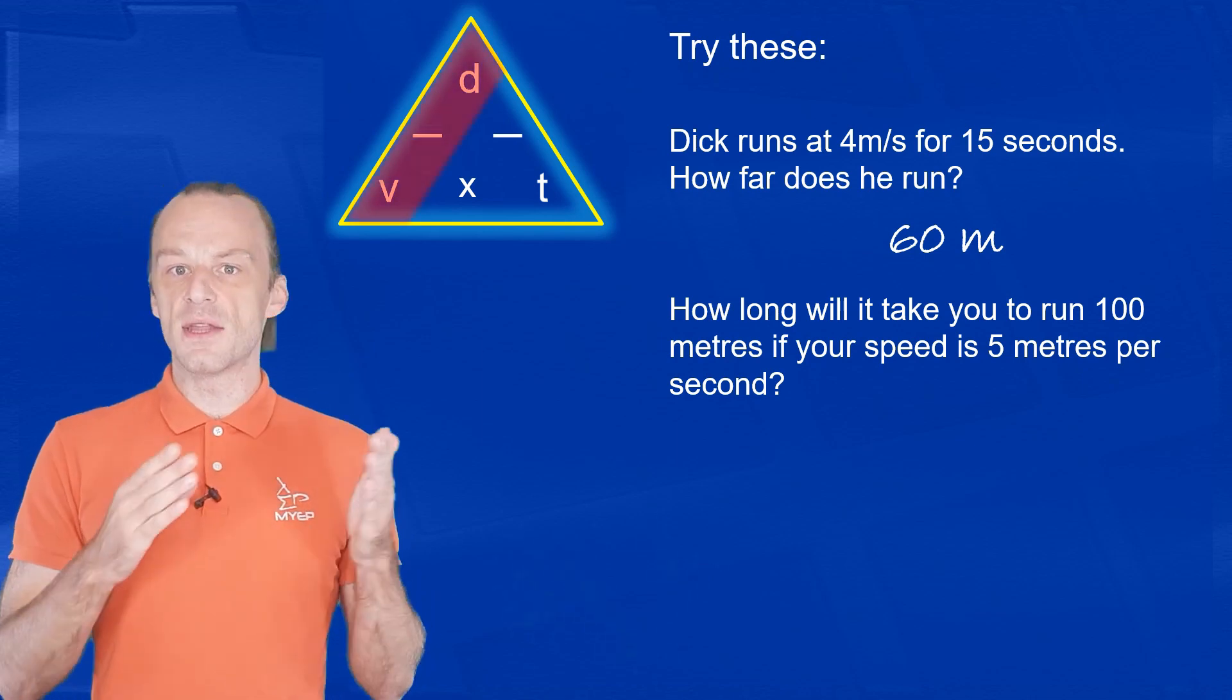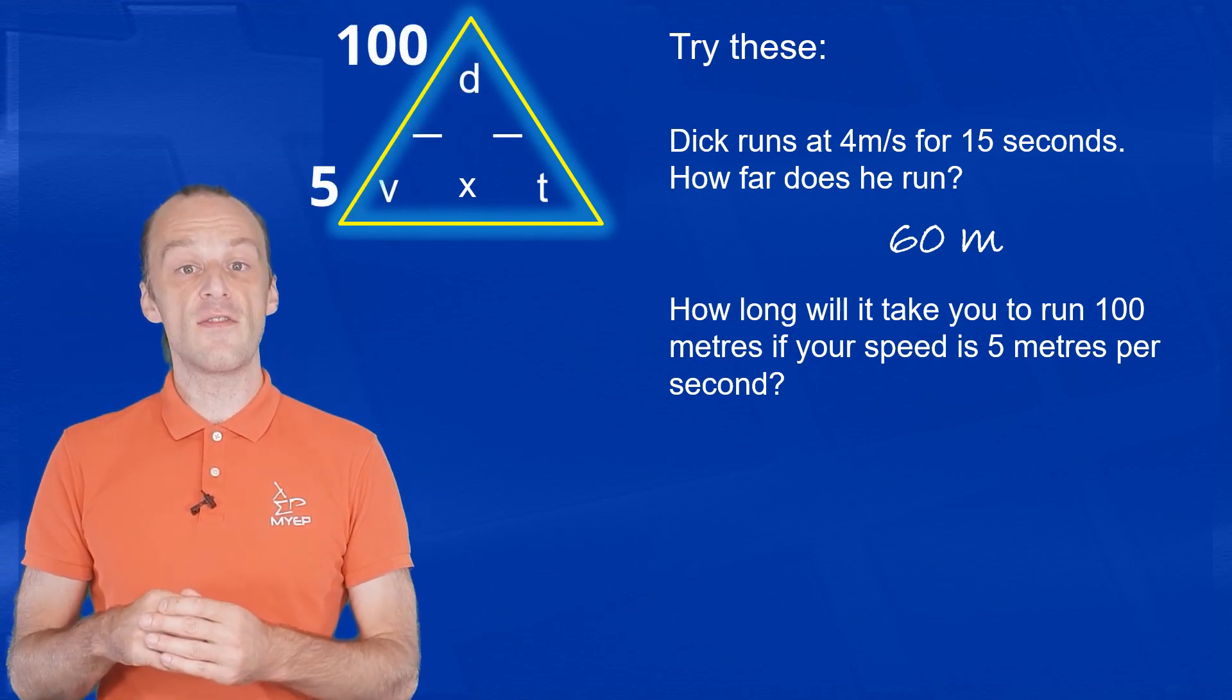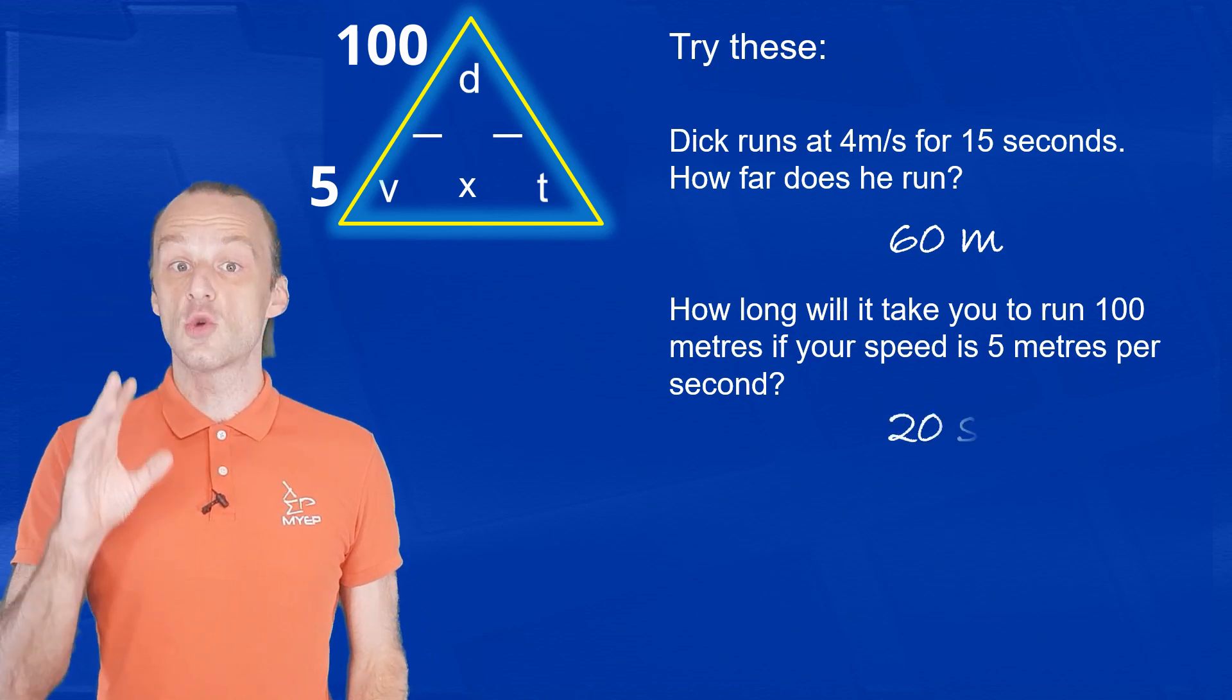Divide the distance by the speed, 100 divided by 5, and this gives us a time of 20 seconds.